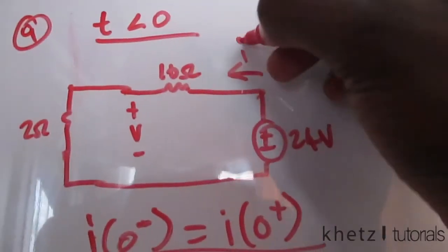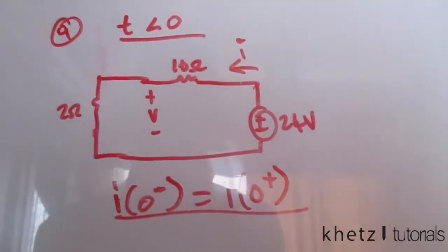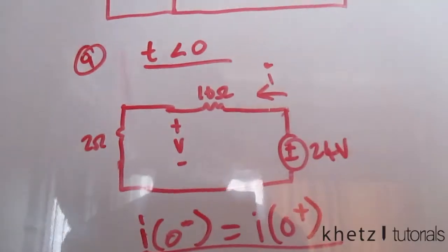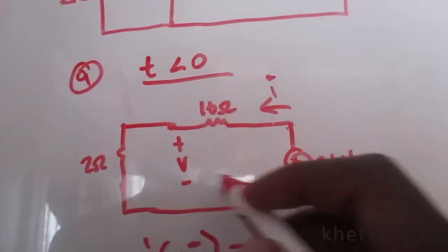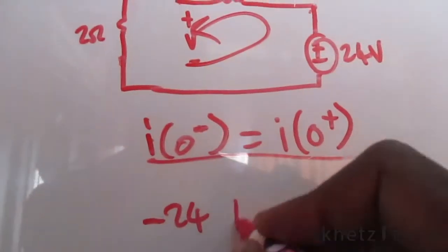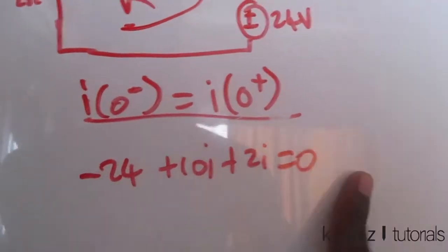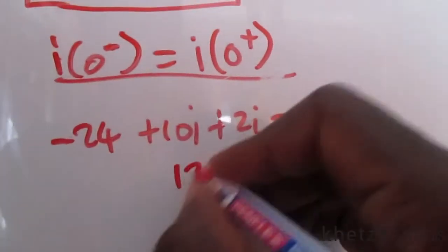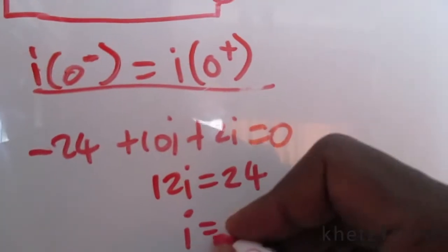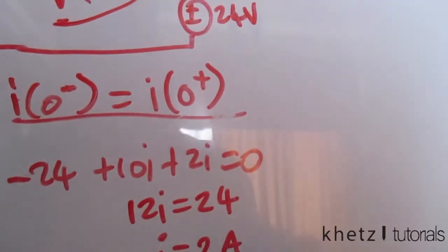i is indicated in the circuit. Going around the loop in the direction shown using KVL: negative 24 plus 10i plus 2i equals zero. This gives 12i equals 24, and dividing both sides by 12 we get i equals 2 amperes.